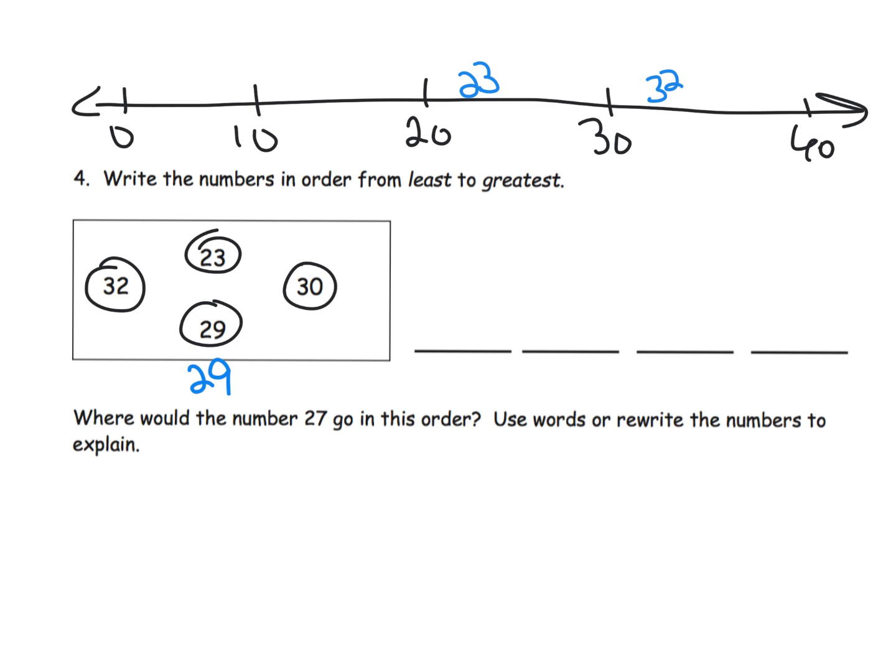All right, so now we have, let's see, 29. Where is 29 going to be? Well we want students to know that it's almost 30 but not quite, so it's going to live on this side less than 30, not more than 30. And that makes sense because look we've got 23 and 29 and that's showing us the right order, that 23 is less than 29.